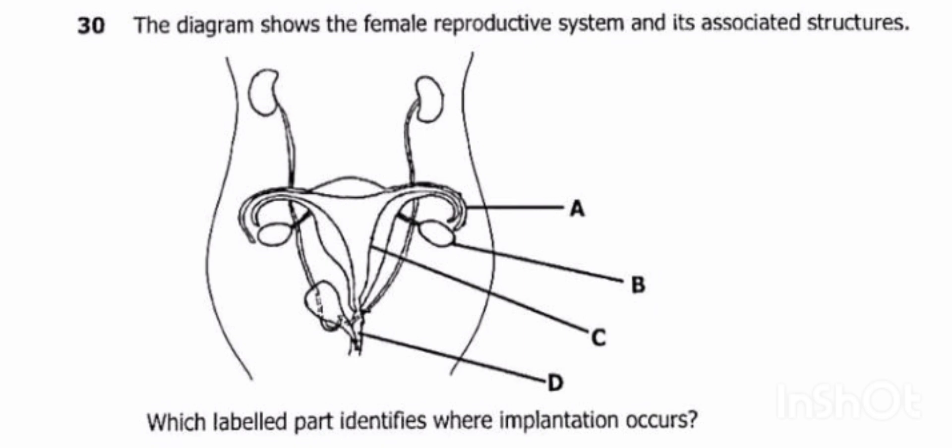The zygote is formed in Part A, which is the fallopian tube. Then the zygote moves and attaches itself to the uterus, which is Part C. So implantation occurs in the part labeled C.